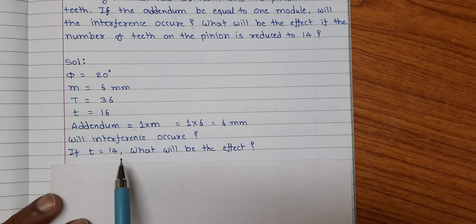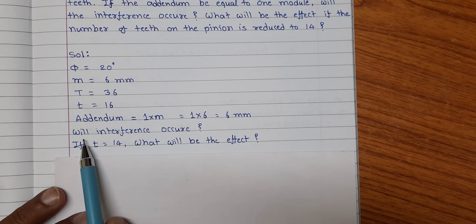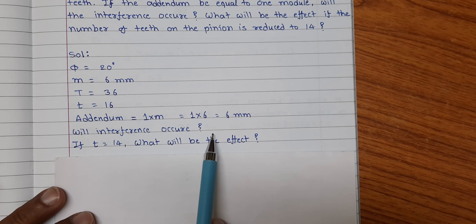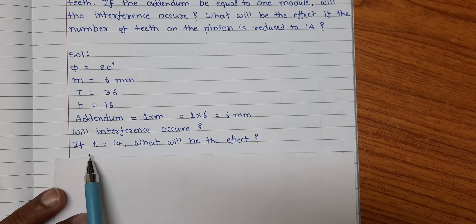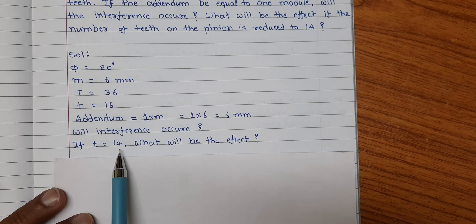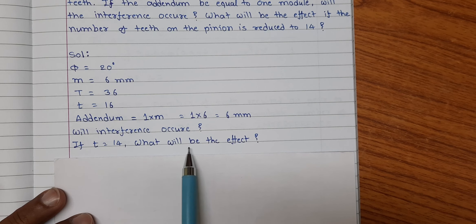For this condition, we have to decide either interference will occur or not. And we have to also check what will happen if number of teeth of pinion are reduced to 14. Either the interference will occur or not.